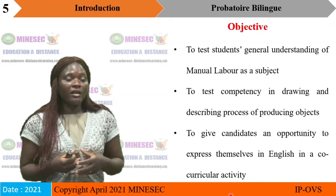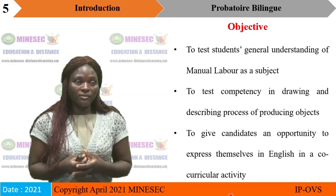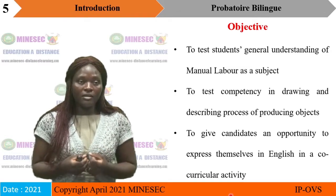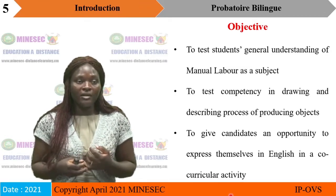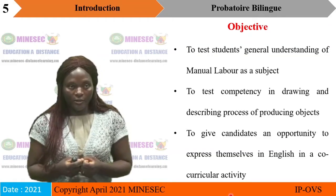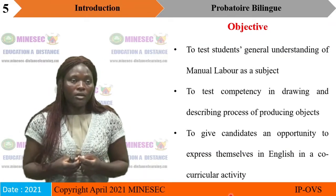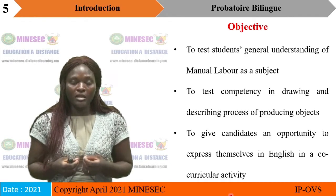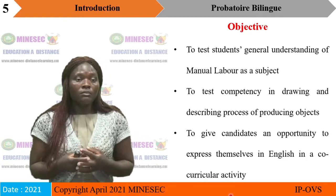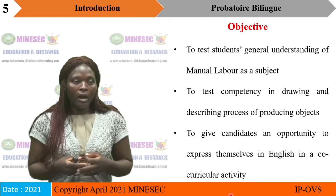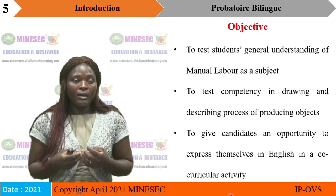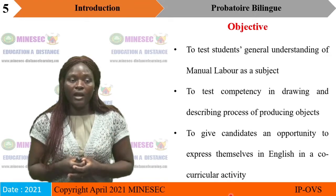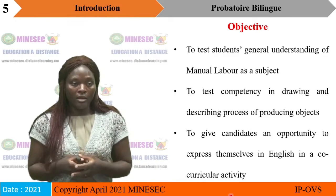The objectives of this lesson are: to test learners on the general understanding of manual labour as a subject; to test the competency in drawing and describing processes of producing objects; and to give candidates an opportunity to express themselves in English in a co-curricular activity.